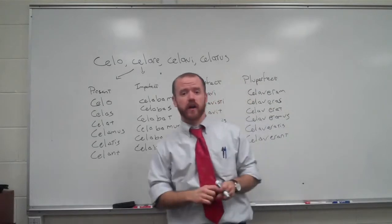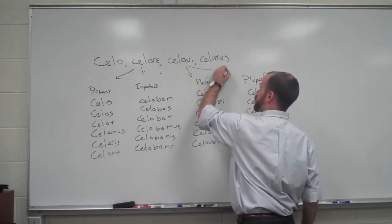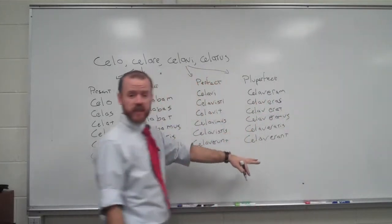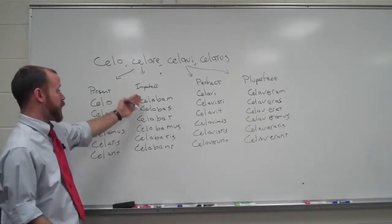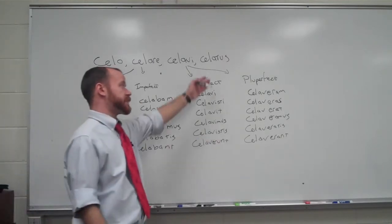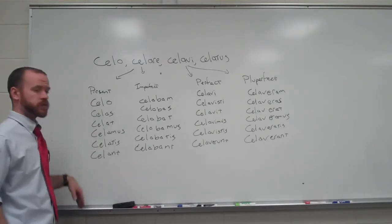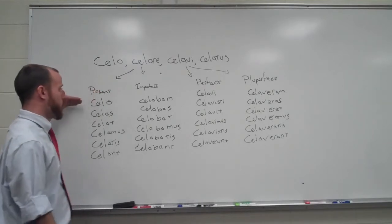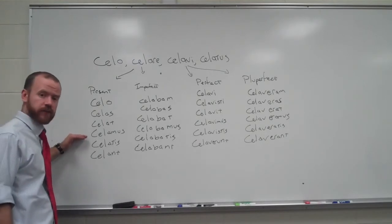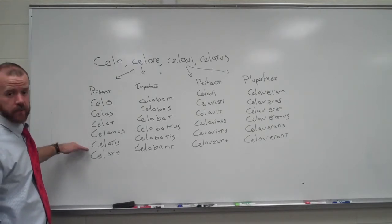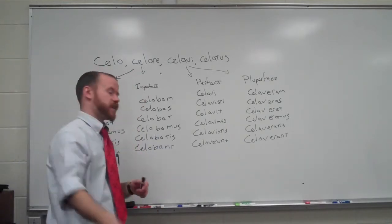And this holds true for all of our conjugations — you use the second principal part for the present and imperfect, and the third principal part for the perfect and pluperfect. You chop off the ending and add on a tense indicator sometimes, or just a different set of endings. Notice that a pattern holds through for most of them: most have an O or M for first singular, S for second, T for third, mus for first plural, tis for second plural, and nt for third plural. That's how we can memorize these patterns.